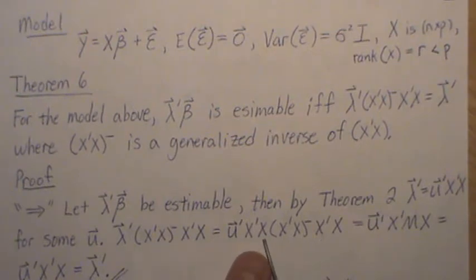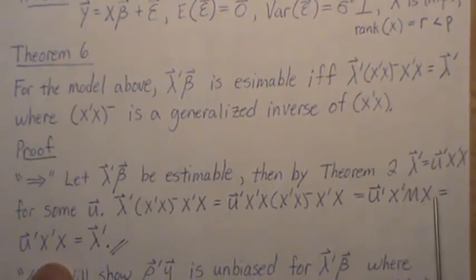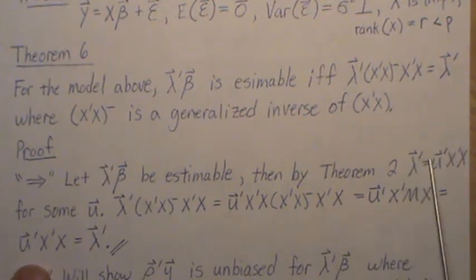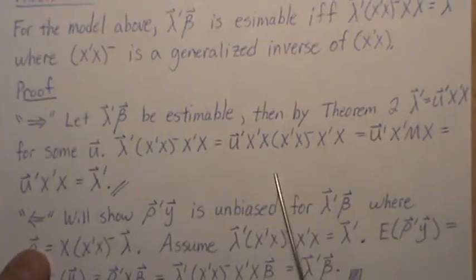Now this piece here, x, x transpose x generalized inverse x transpose is m. And m is a perpendicular projection matrix under the column space of x. So mx is just x. But this was lambda according to theorem two. So we do get lambda back if it's estimable. Now let's go back the other way.